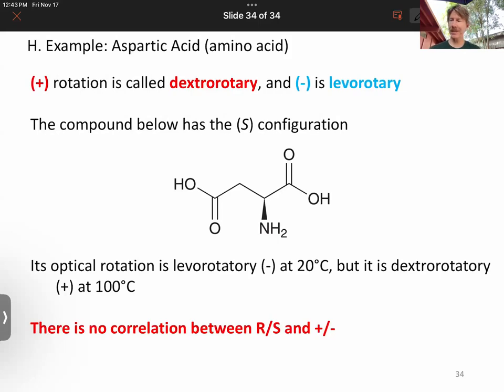We've got aspartic acid. And as far as aspartic acid goes, then it's an amino acid. We said plus is dextrorotary, dextro, and minus is levorotary. And the compound has the S configuration, which we can prove.